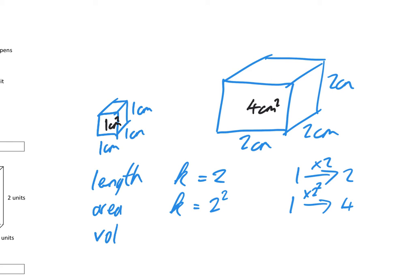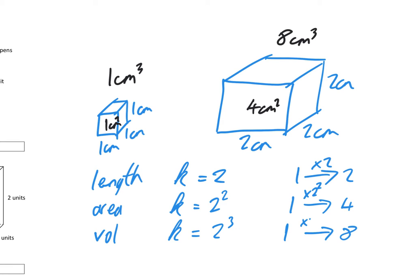And for volume, the volume of the first cube is 1 cm³ (1 times 1 times 1), and the volume of the second is 8 cm³ (2 times 2 times 2). So the scale factor for volume is 2 cubed, because 1 goes to 8 by multiplying by 2 cubed. So in summary: for length, your scale factor is k; for area, your scale factor is k squared; for volume, your scale factor is k cubed.